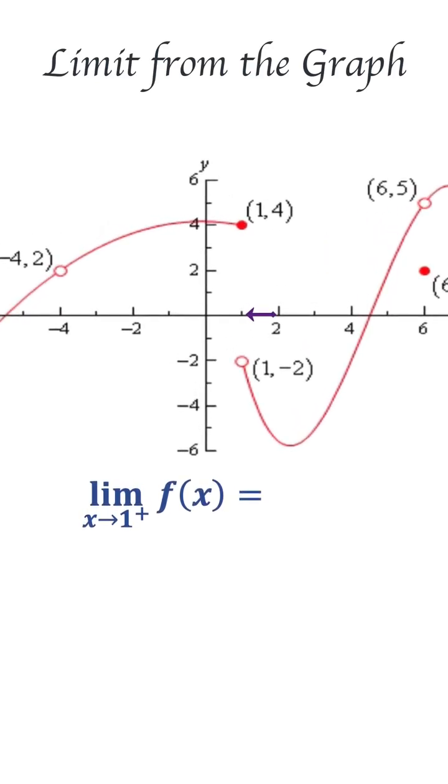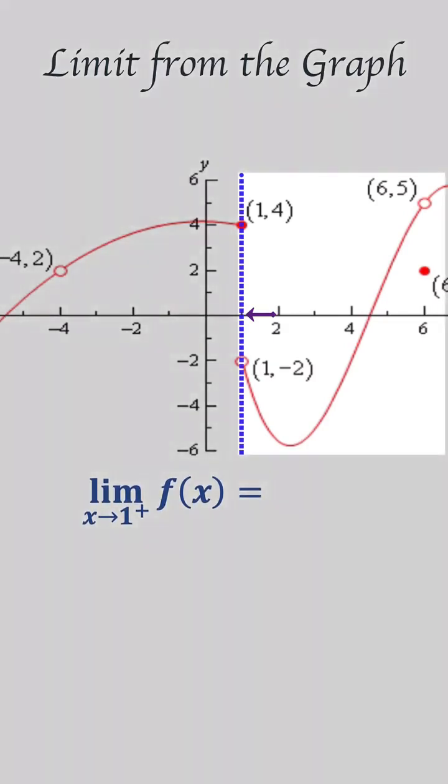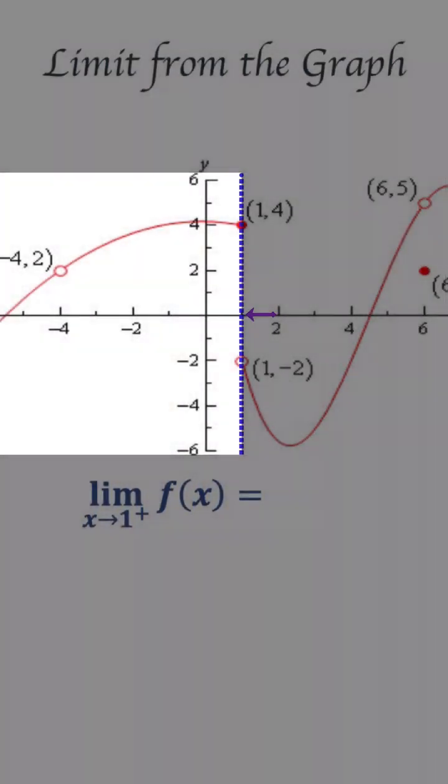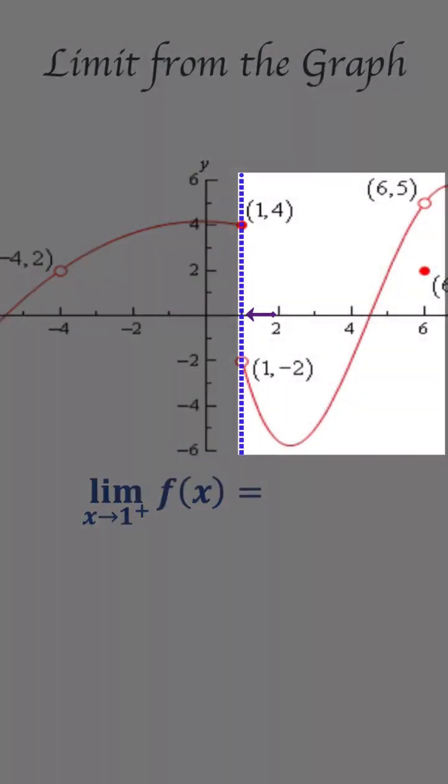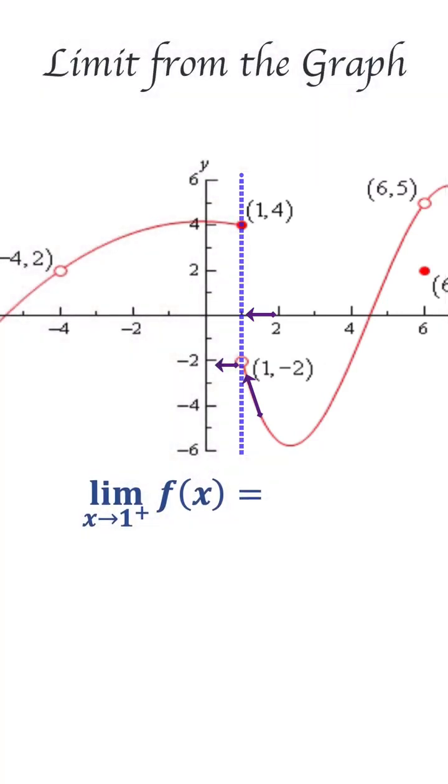My advice to you: imagine a vertical line at x equal to 1 and look at that line from the right and look at that line from the left. From the right side of this line, you can see the graph is approaching negative 2 from the right side. So as x approaches 1 from the right, it's going to be equal to negative 2.